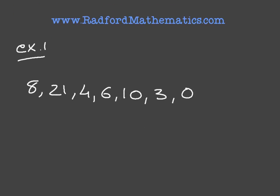Now, when we're looking for the median value, the first thing we must always do is to rewrite the numbers in increasing order, meaning we have to rewrite this list starting from the smallest number and finishing with the largest number. So looking at these numbers here, we can go ahead and rewrite this. Looking at the smallest one first, that would be 0, followed by 3, followed by 4, followed by 6, 8, 10, and last but not least, 21.